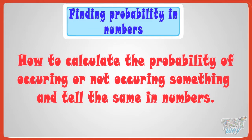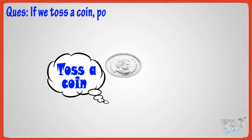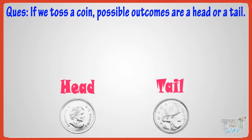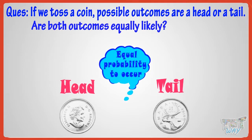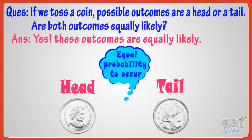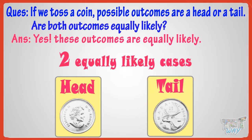Now, let's learn what are equally likely cases. For example, if we toss a coin, the possible outcomes are a head or a tail. Are both outcomes equally likely? That is, do both have equal probability to occur? Yes, these outcomes are equally likely — head and tail are equally probable to come if we throw a coin. So the total number of equally likely cases in the case of a coin are two.